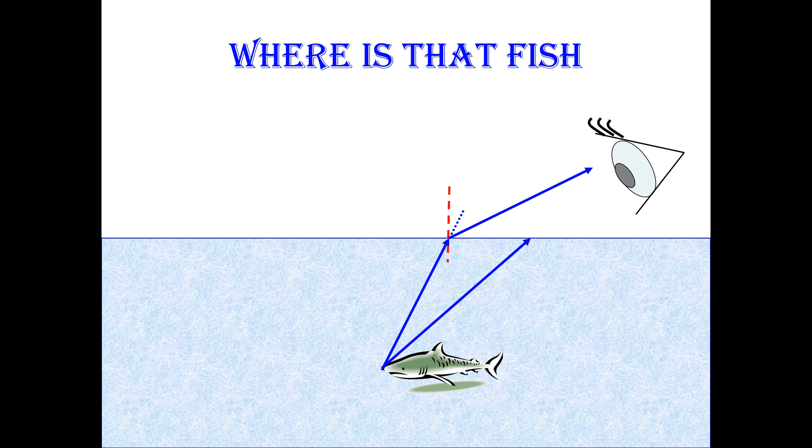So this is how you're managing to see the fish. If that incident ray had continued on in its original direction, unbent, unrefracted, it wouldn't have reached your eye in order to allow you to form an image of the fish. So the image that you see is because that light has refracted away from the normal as it's leaving the water.